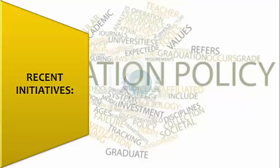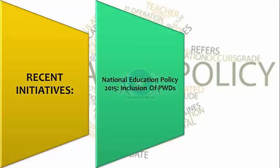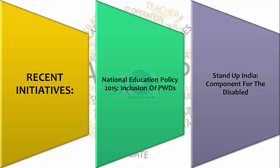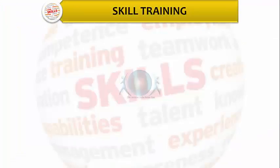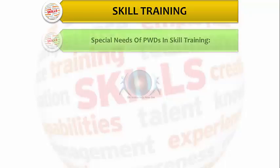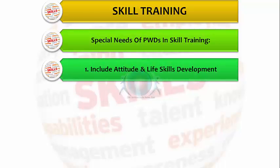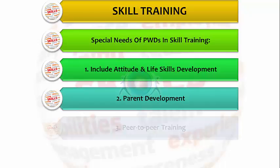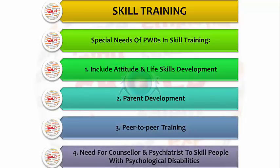The Government of India has taken many recent initiatives. The National Education Policy of 2015 does include PWDs with a special mention. Stand Up India has a component for the disabled earmarked. The government also has special schemes and incentives in skill training for PWDs, recognizing their special needs and including attitude and life skills development, parent development, peer-to-peer training, and a need for a counsellor and psychiatrist to skill people with psychological disabilities.